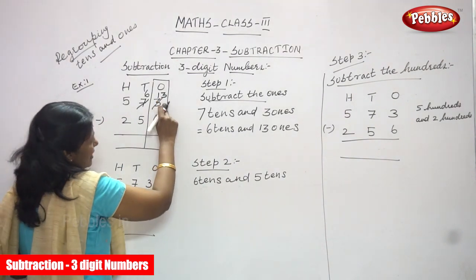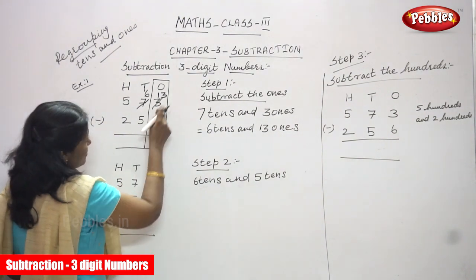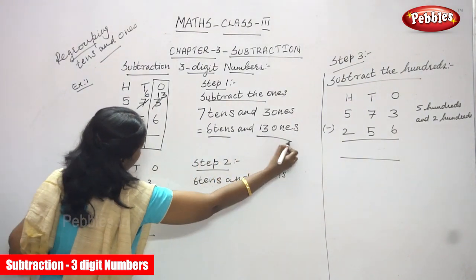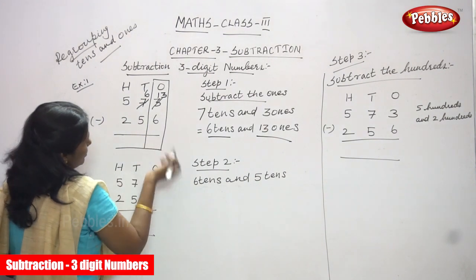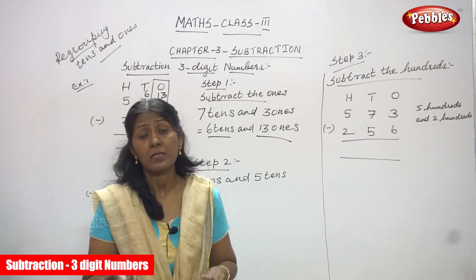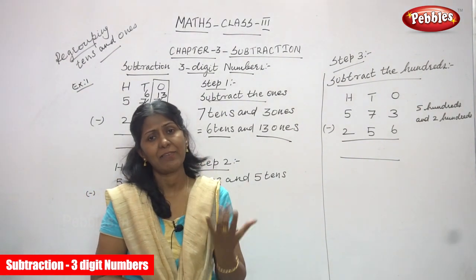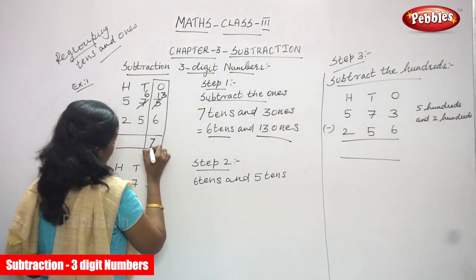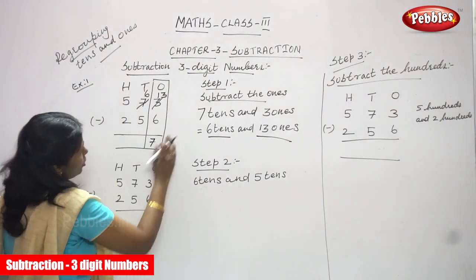Now it is a greater number: 13 minus 6. You have to subtract from 13 to 6. That is what I have written — 6 tens and 13 ones. You know that is backward counting. After 6, start counting: 7, 8, 9, 10, 11, 12, 13. So the answer is 7. That is, the answer is 7 ones. Step 1 is over.